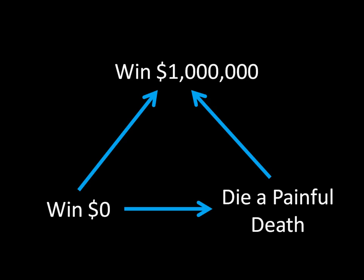So, as an example of this — we've seen outcomes like this before: winning a million dollars, winning zero dollars, and dying a painful death. We see that this individual has a complete preference ordering, because there are arrows going from every single one of these outcomes to every other outcome. This individual also has transitive preferences, and that alone tells us that this individual is rational. You might note that the individual prefers dying a painful death to winning a million dollars, and that's pretty strange — I certainly wouldn't want to die a painful death.